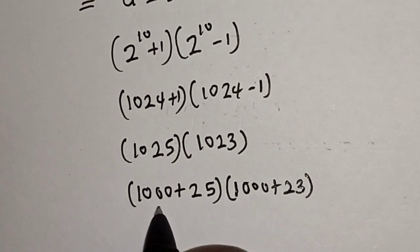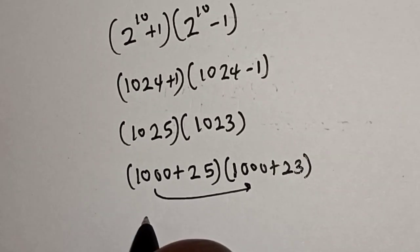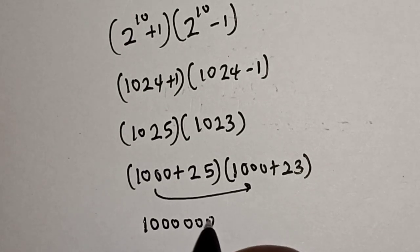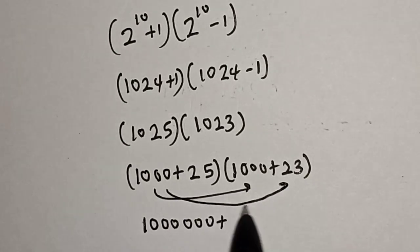Now let's multiply out these two expressions. This goes to this, that is one million, plus then if you multiply this by this we have 23,000,